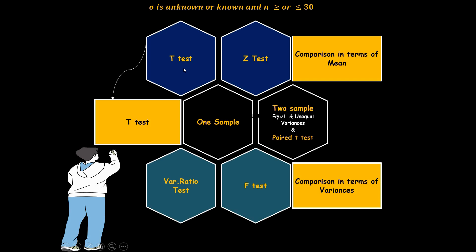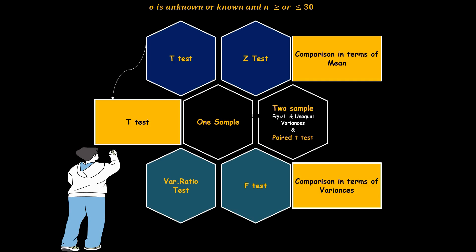In statistical hypothesis testing, we compare things either in terms of means or in terms of variances. When we are interested in comparing at most two samples in terms of means, we have two categories: t-test and z-test. An important criterion is whether the population standard deviation is known or unknown, and what is the size of the sample — whether it is greater than or less than 30. A sample size less than 30 is considered small, and greater than 30 is considered large.